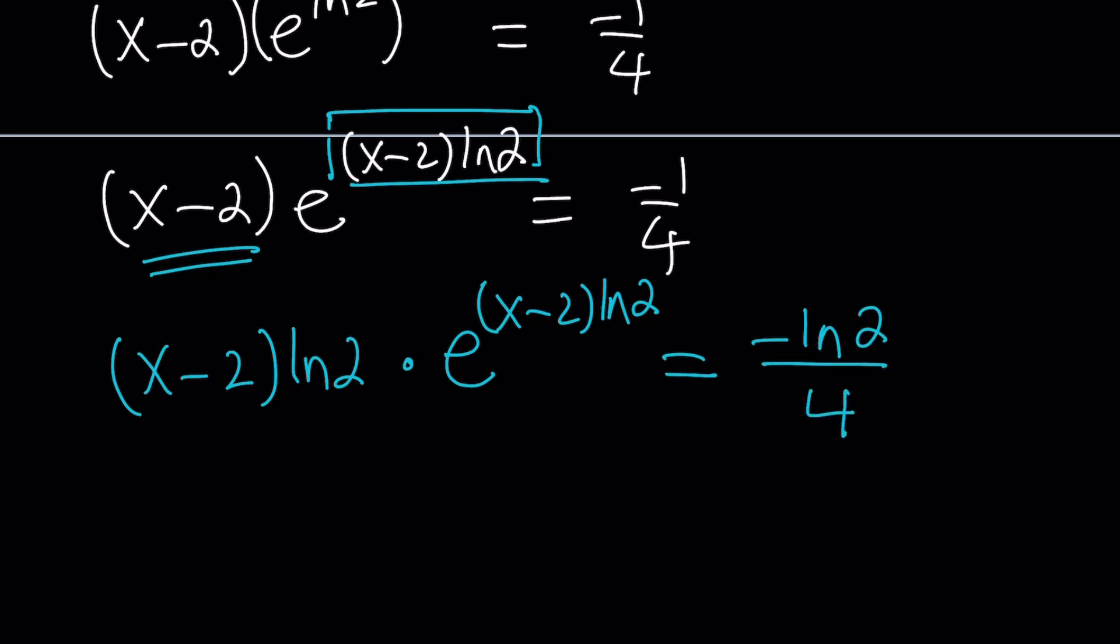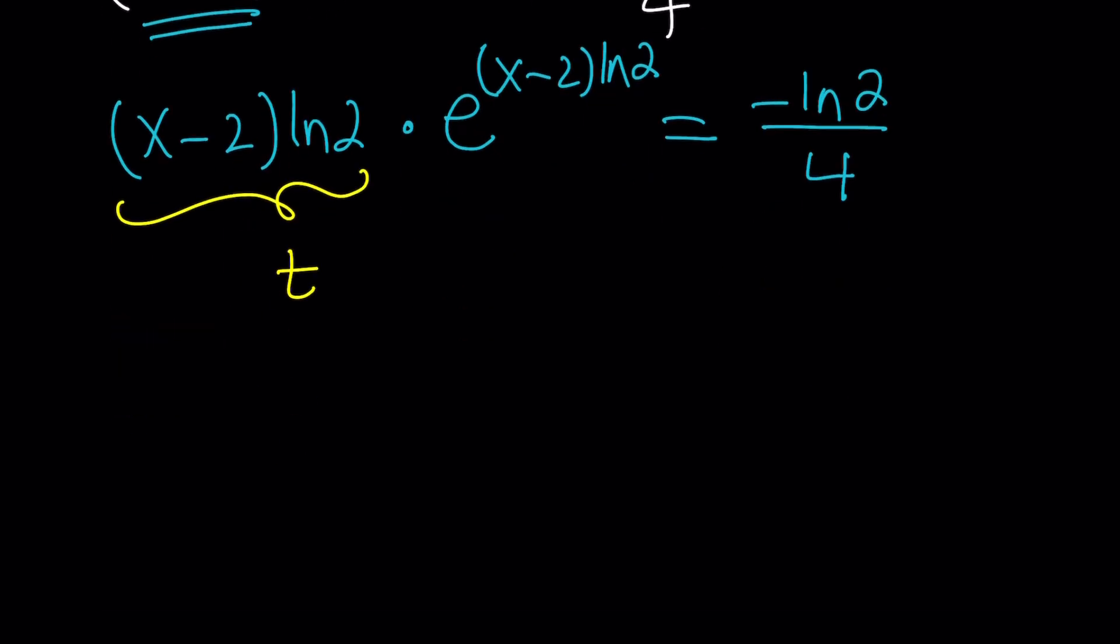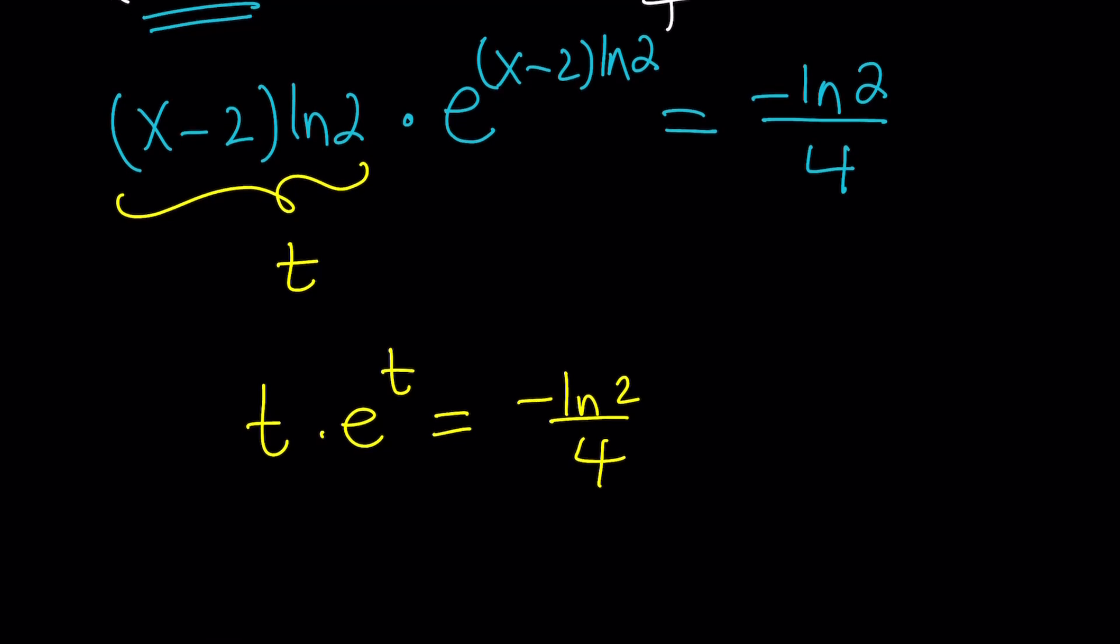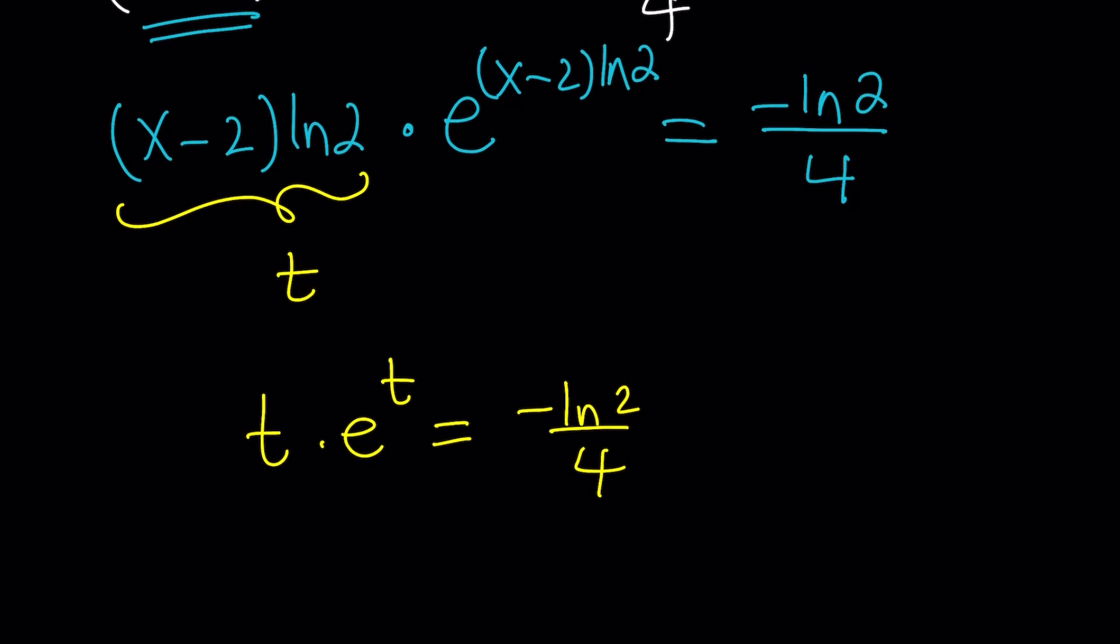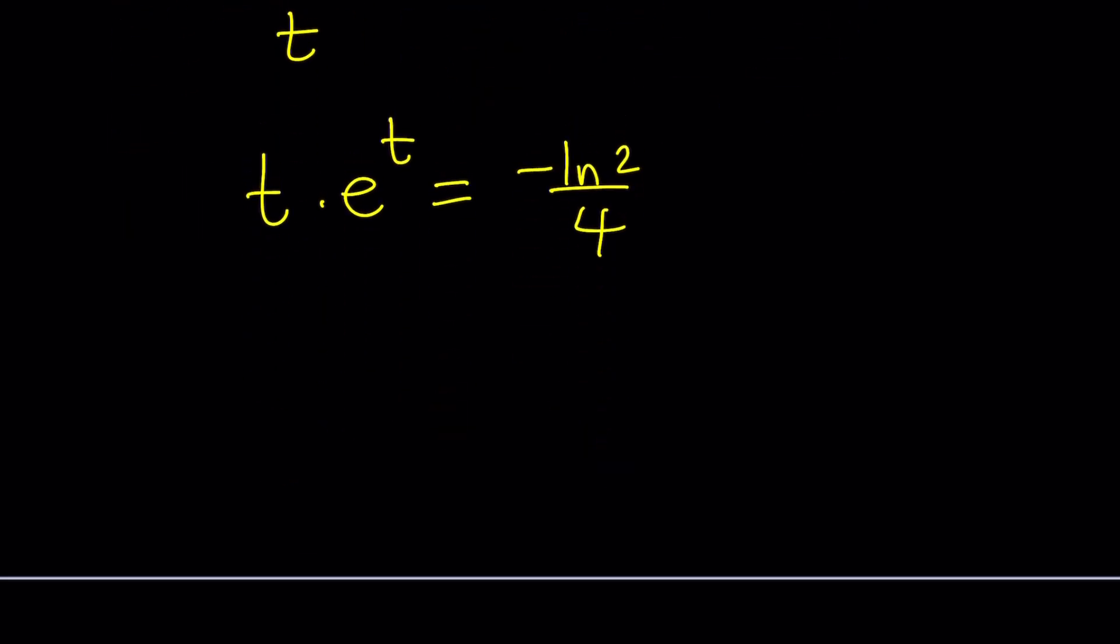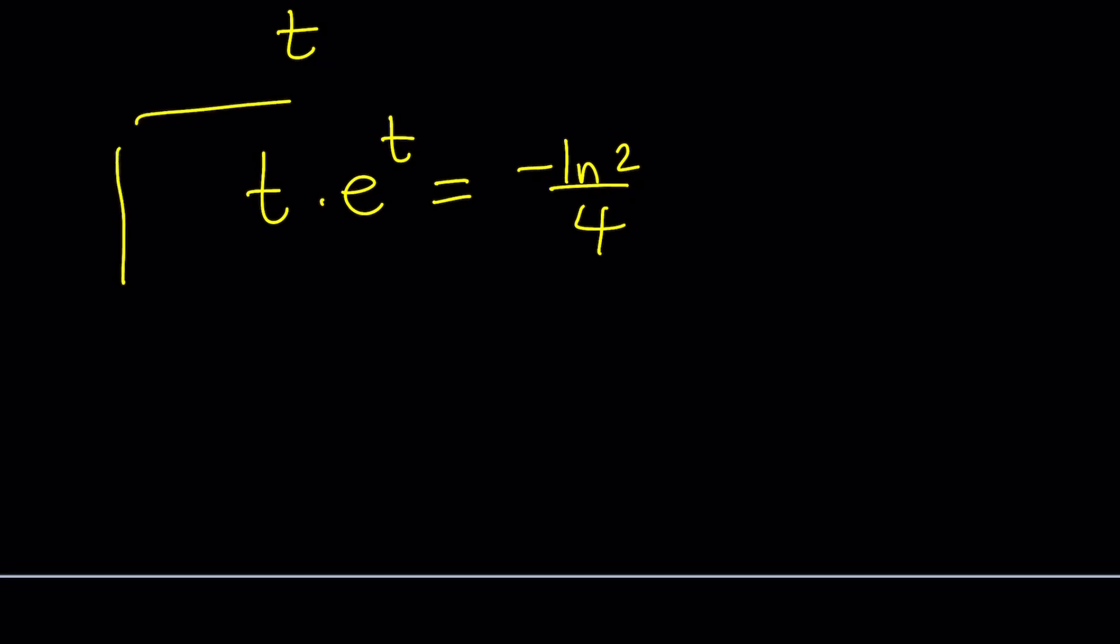We can just apply W to both sides, but before that, let's do a little bit of substitution. Let's call x minus 2 ln 2 equal to t, and this gives us t times e to the t equals negative ln 2 over 4. The left-hand side is nice because if I just apply Lambert's W function, I'm going to get t from here. But before we do that, let's work on negative ln 2 over 4 a little bit.